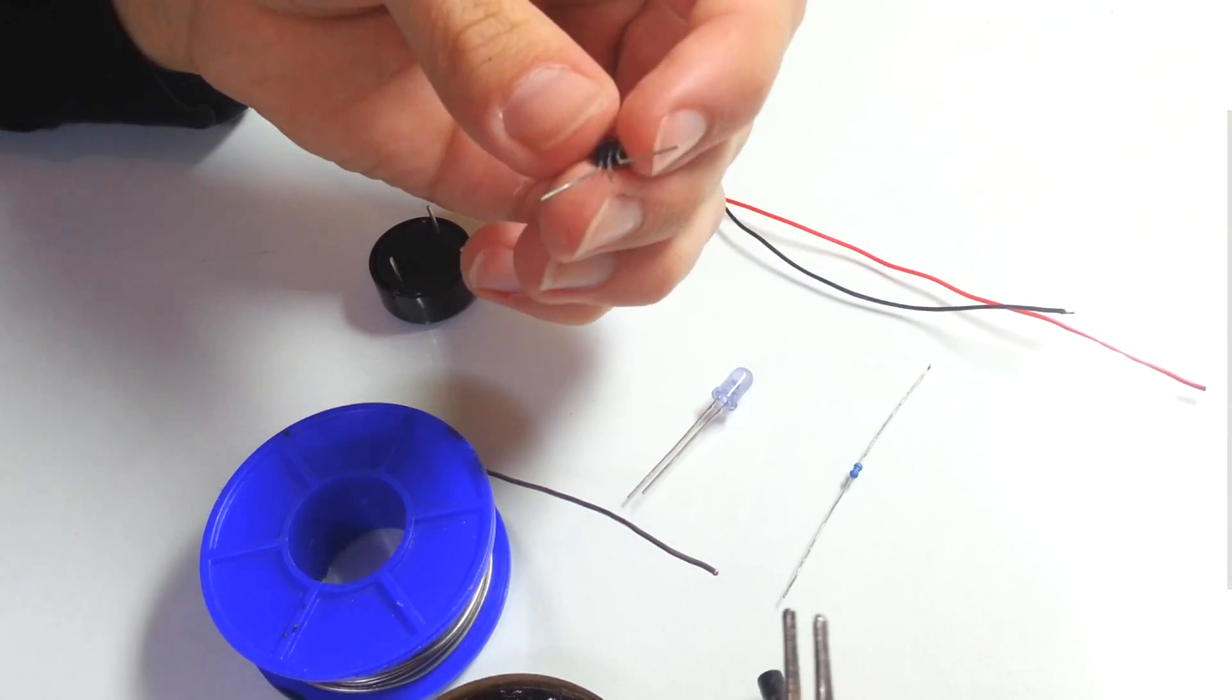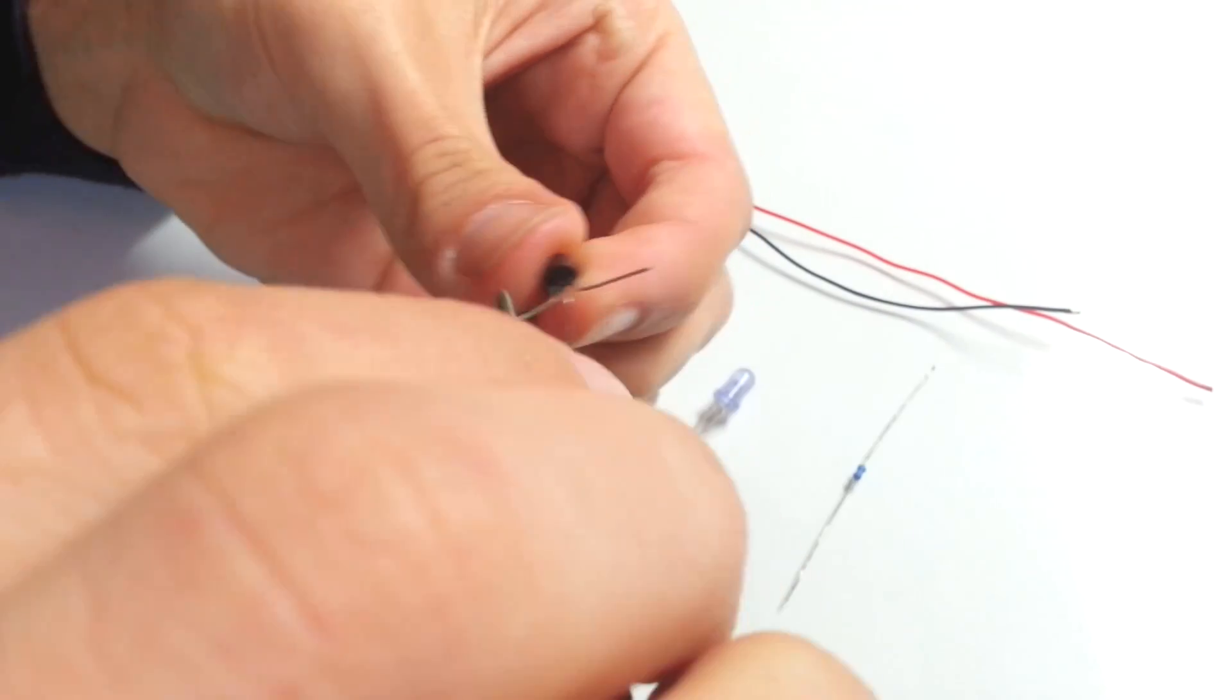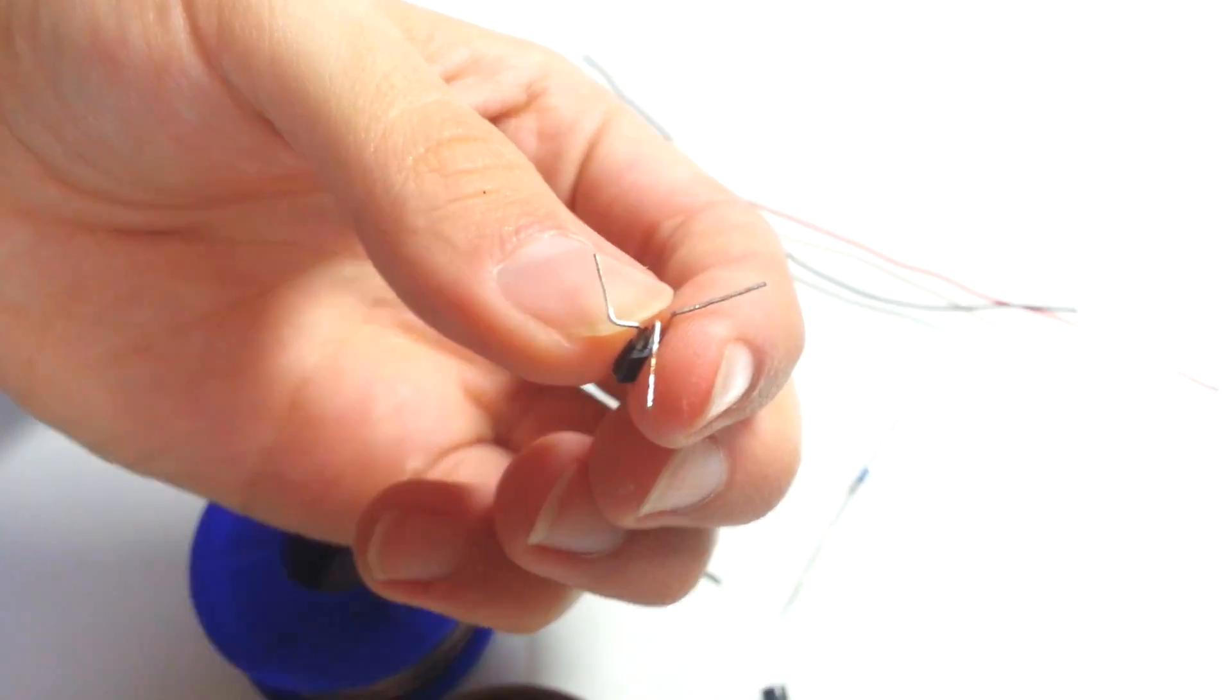First I'm going to solder together the source lead of J310 and emitter of BC547 and connect to them a black wire.